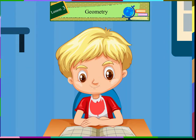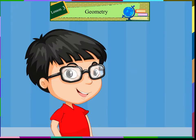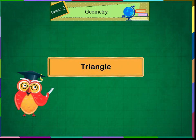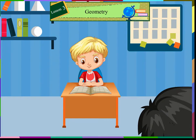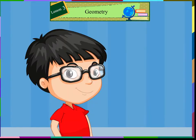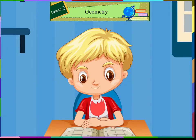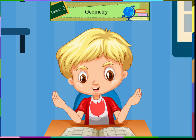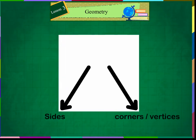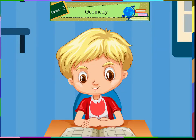Can you please tell me more about plain shapes? Yes, why not. There are some properties of plain shapes. Different plain shapes have different numbers of sides and corners. The corners are also called the vertices. Let us see each one of them in detail.